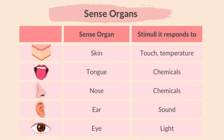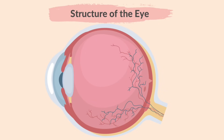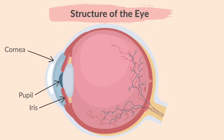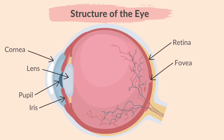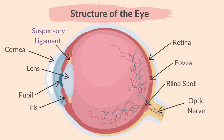You are expected to identify in diagrams and images the structures of the eye. These are: the cornea, the iris, the pupil, the lens, the retina, the fovea, the optic nerve, the blind spot, the suspensory ligaments, and the ciliary muscles.